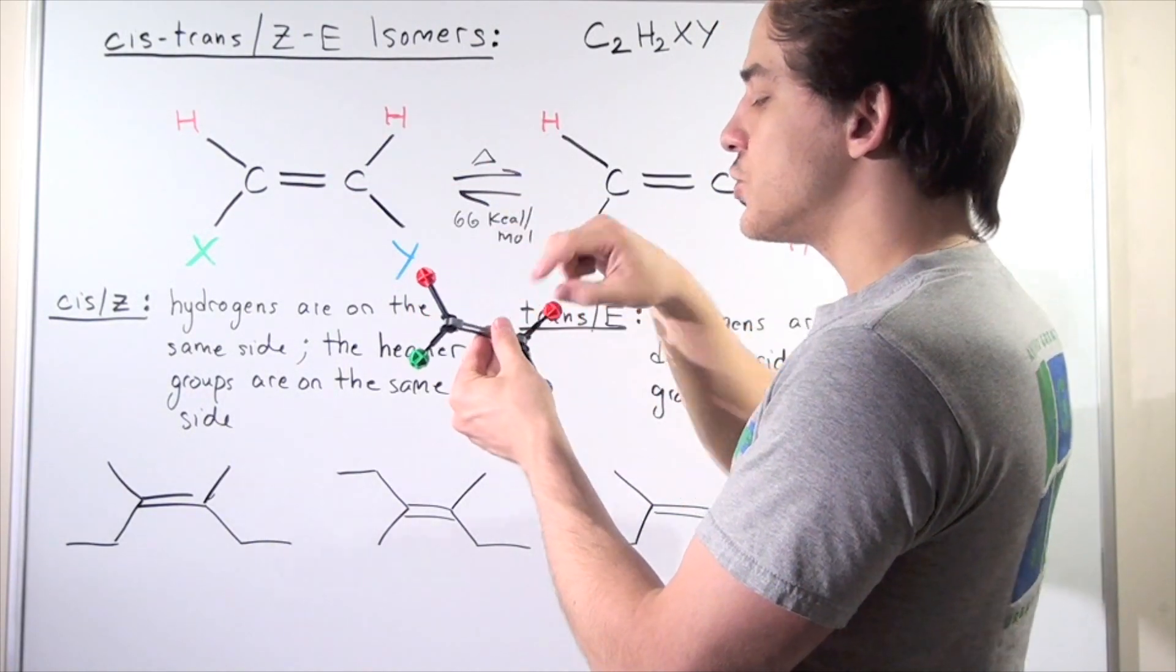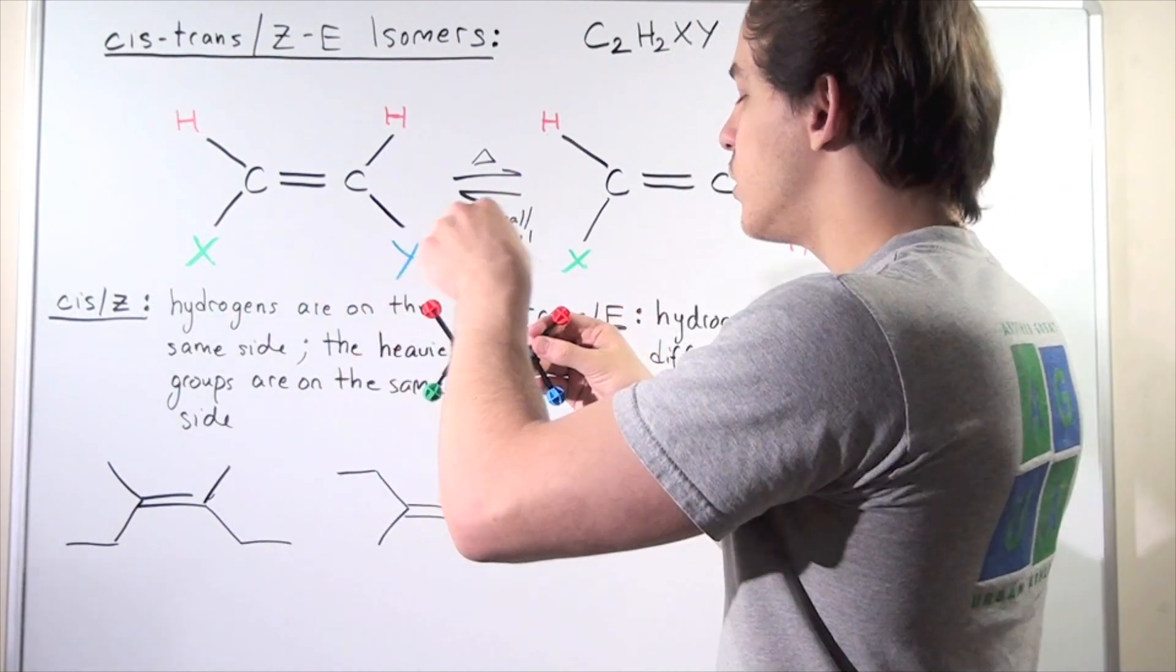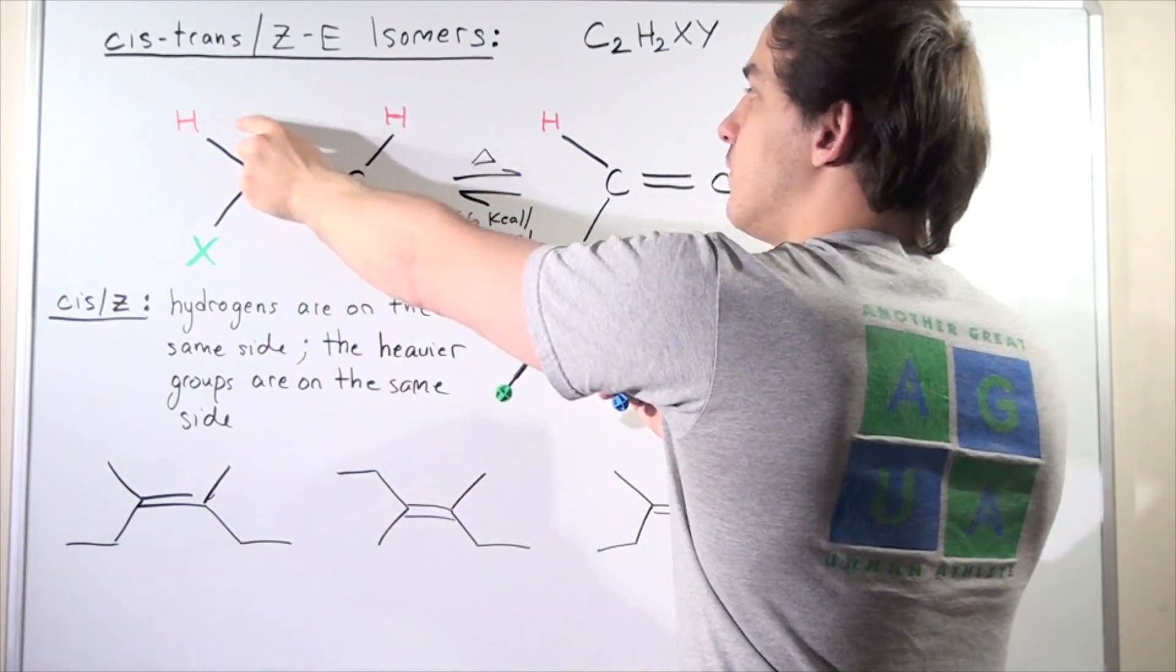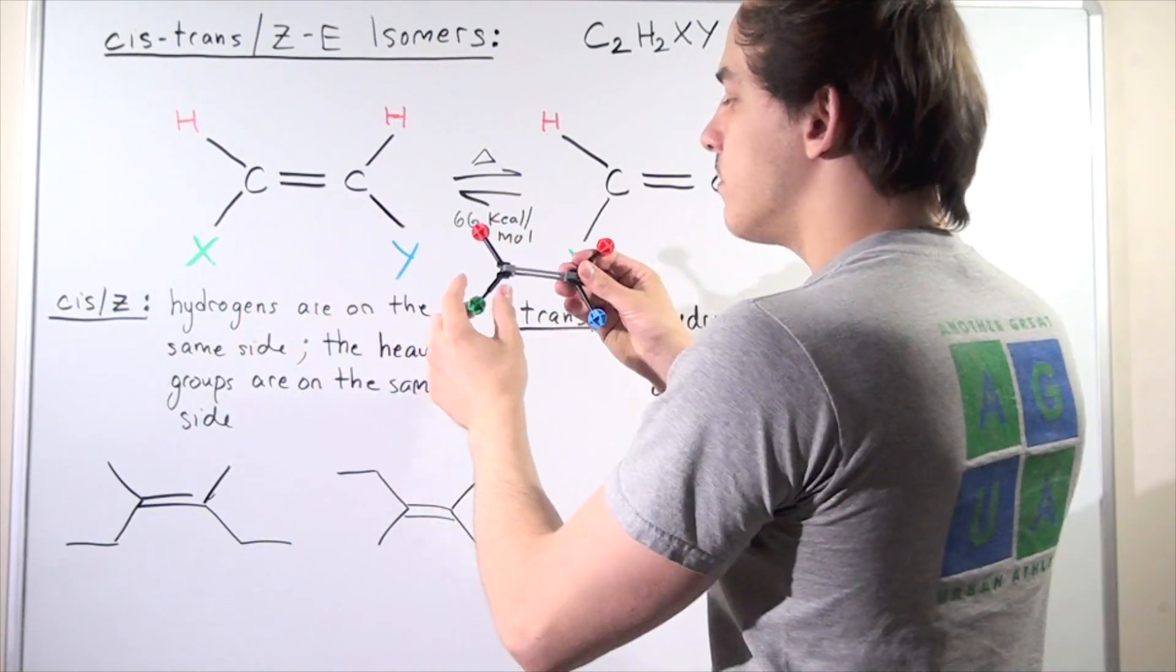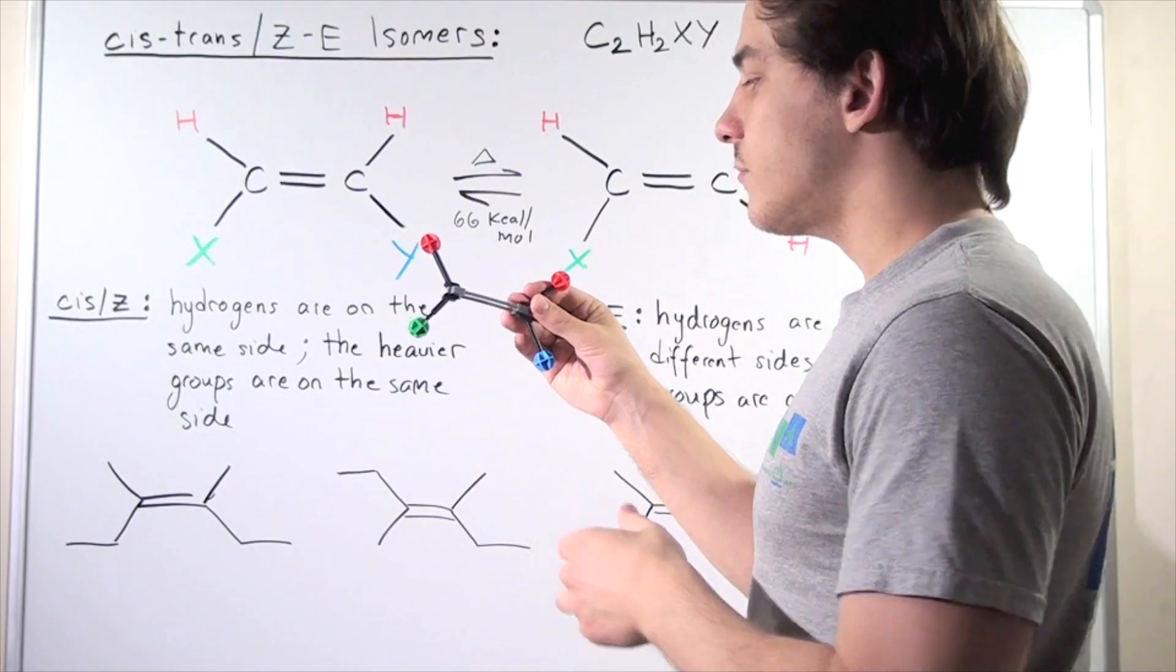We have the two intersections. So these are the carbon atoms shown here. And here we have the two H atoms, given the red, and the X atom, the green atom, and the Y atom, the blue atom.